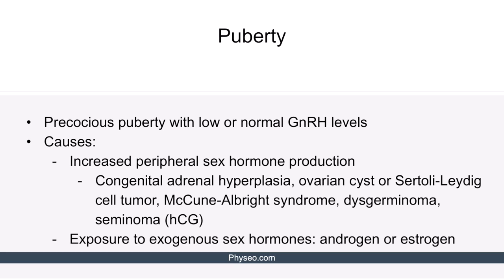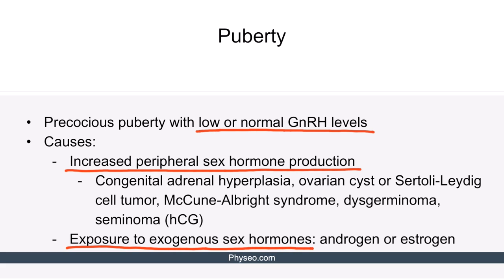Peripheral precocious puberty is precocious puberty with low or normal GnRH levels. Causes can be classified into two large groups: increased peripheral sex hormone production or exposure to exogenous sex hormones. Peripheral endogenous sex hormone production can be observed in congenital adrenal hyperplasia, an ovarian cyst, a Sertoli-Leydig cell tumor, McCune-Albright syndrome, dysgerminoma, and seminoma. Dysgerminoma and seminoma can also cause this due to HCG production.